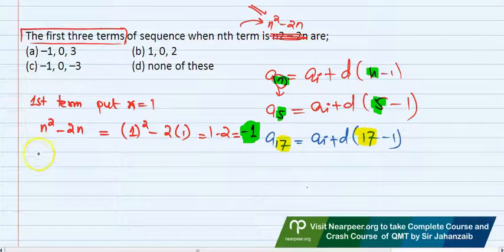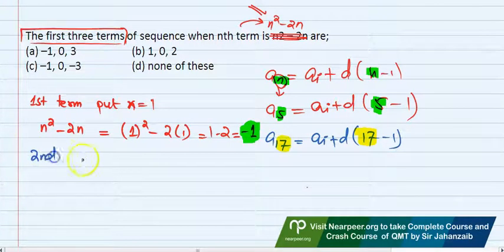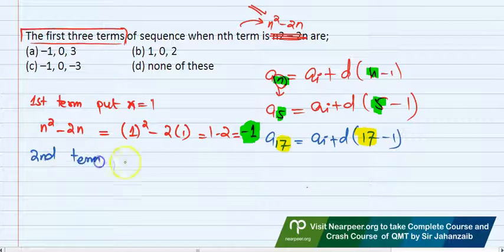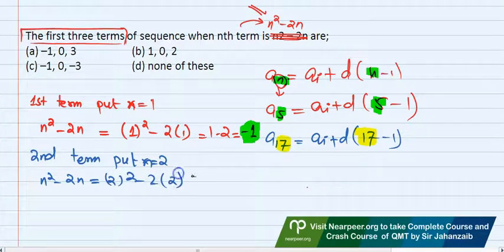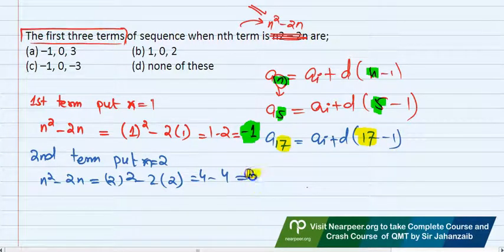Second term calculation, to find the second term, I have to put n equal to 2. The formula is n square minus 2n. Here I have 2 ka square minus 2 into 2, 4 minus 4, here I have 0. This will be your second term.